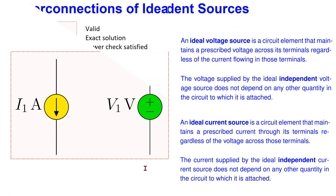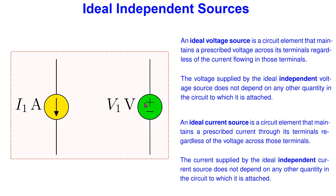Recall that ideal independent sources do not exist in practice and they are circuit theory constructs only. An ideal voltage source is a circuit element that maintains a prescribed voltage V1 across its terminals regardless of the current flowing in those terminals. The word independent means that the voltage supplied by the ideal voltage source does not depend on any other quantity in the circuit.